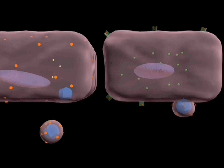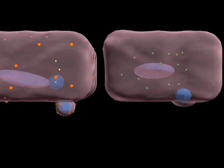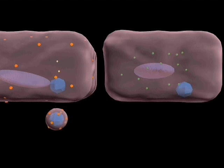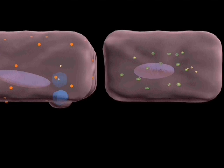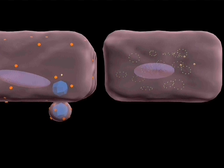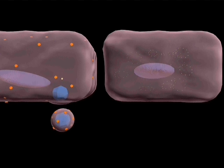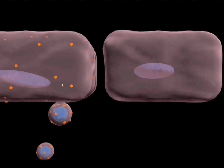Interferon gamma produced by the activated T cells also induces synthesis of antiviral proteins. The antiviral proteins detect foreign genetic material, becoming activated, and block viral replication by breaking down the mRNA and stopping protein synthesis.